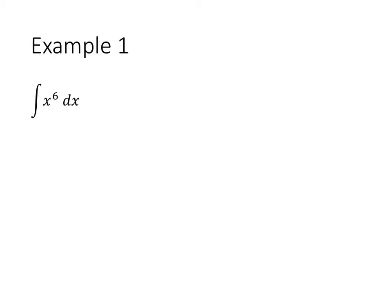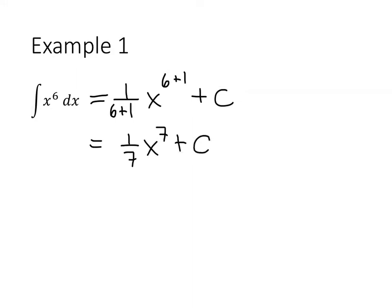Let's work through some examples. If we want to take the antiderivative of x to the sixth, we use our reverse power rule. We take our original power and add 1, then divide by that new power. So the antiderivative of x to the sixth is x to the sixth plus 1, divided by 6 plus 1, plus c. We can simplify this to 1 seventh x to the seventh, plus c.